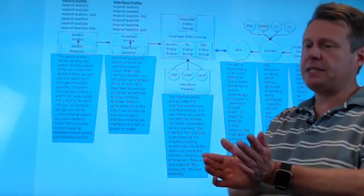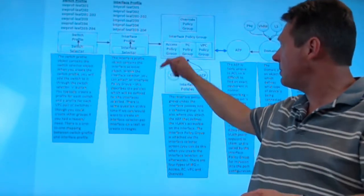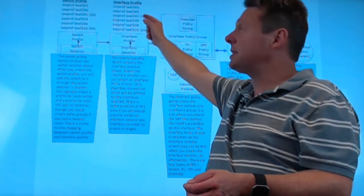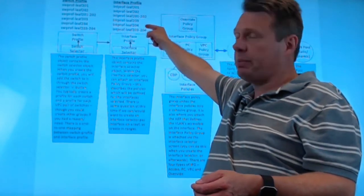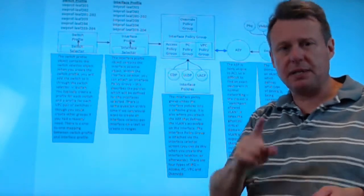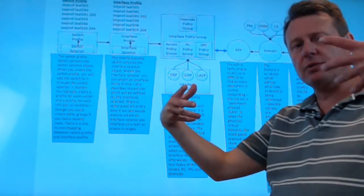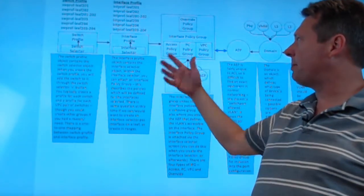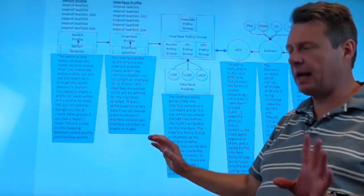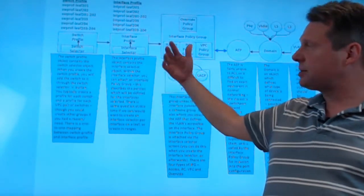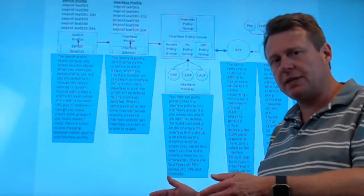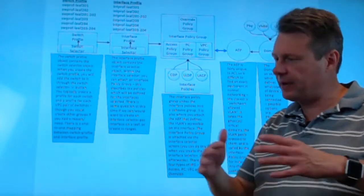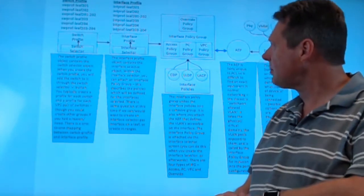If I want to put a VPC on port six on 203 and 204, I don't go to the interface profile for leaf 203 and pick port six and then go to the 204 and pick port six. I come to the combined object and I pick port six one time. And it configures it on both leaves simultaneously. Similar, if we went back and I'm going to drop this analogy after this, but if we wanted to do something for port one on every single leaf in the data center, that's why we would want to do this sort of thing so that I could just configure it once and it's done everywhere.